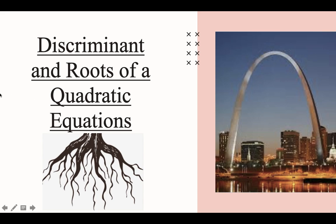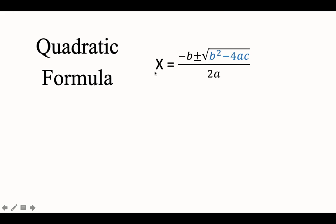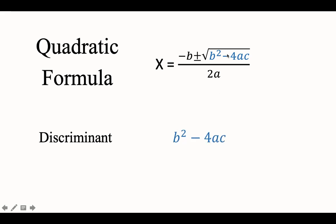Discriminant and Roots of a Quadratic Equation. Recall that this is the quadratic formula represented by x is equal to negative b plus or minus square root of b squared minus 4ac, all over 2a. And this is what we call the discriminant of a quadratic equation: b squared minus 4ac.